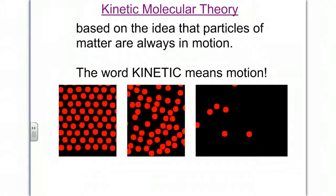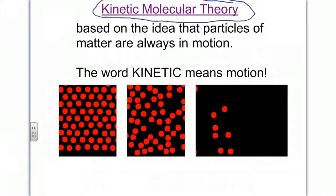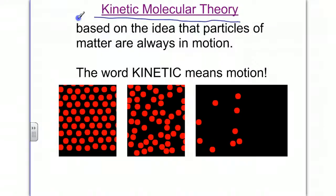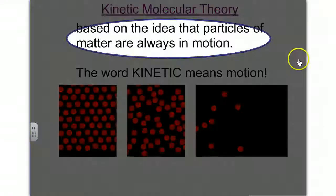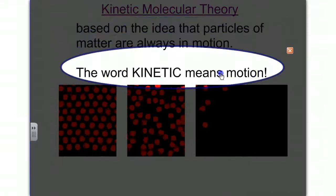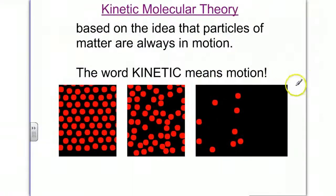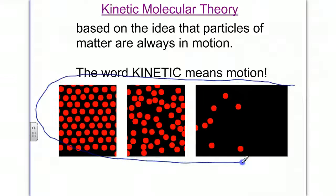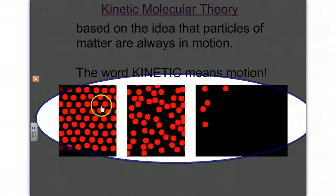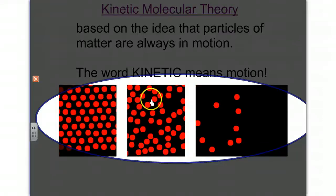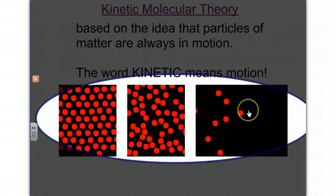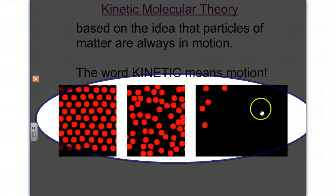The kinetic molecular theory is based on the idea that particles are always in motion. This is true for solids, liquids, and gases. The word kinetic means motion, and regardless of what phase the matter is in, it is constantly moving. Solids move in vibrational or rotational ways, liquids move in a more fluid manner around one another, and gases move rapidly and can spread to fill any container.